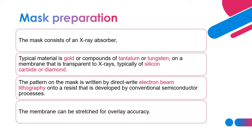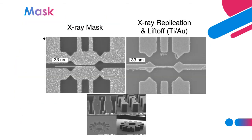The membrane can be stretched for overlay accuracy. The picture on the top left shows the X-ray mask, and after X-ray replication and lift-off, the resulting layer is shown on the right. It still maintains the accuracy of the pattern from the mask to the product replication. X-ray can also penetrate deep enough into the resist, so even if the photoresist is thick, it can still go inside.